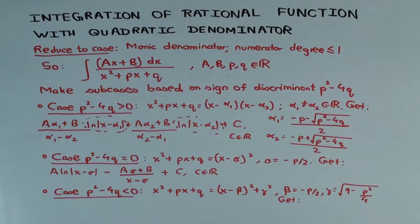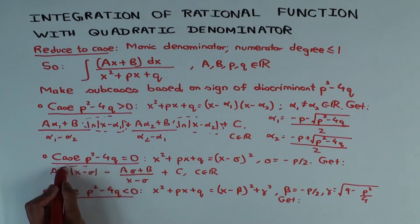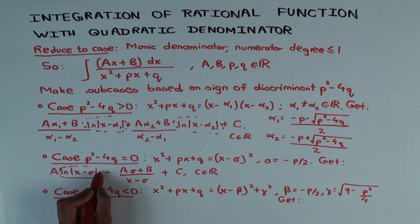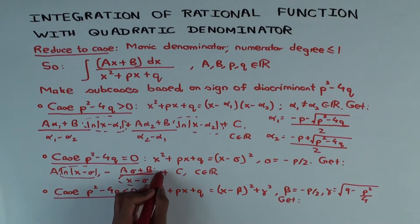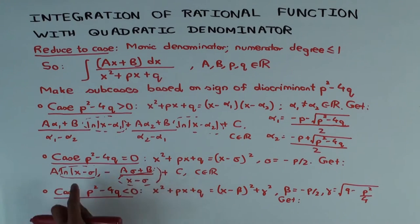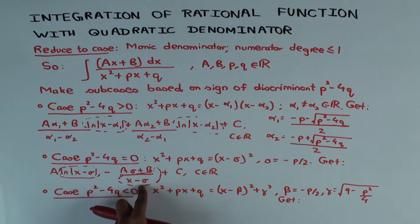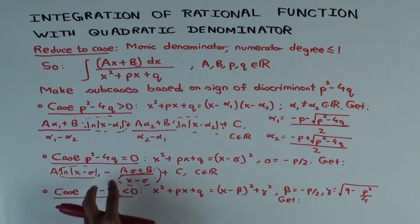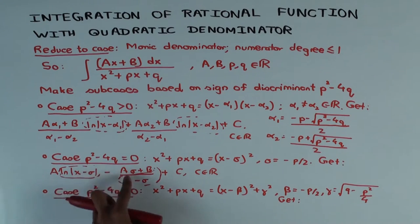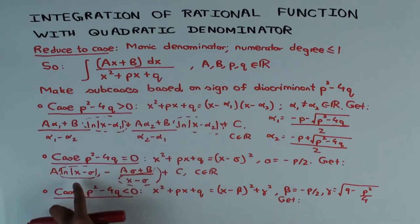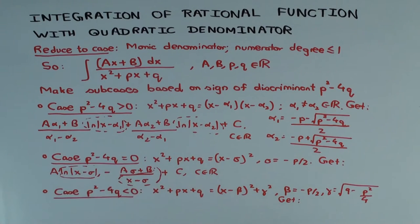Notice again the numerator doesn't affect what the two pieces are — ln|X minus sigma| and one over (X minus sigma| are the two functions whose combination you're taking. The denominator controls what those two functions are; the numerator controls what the coefficients are.